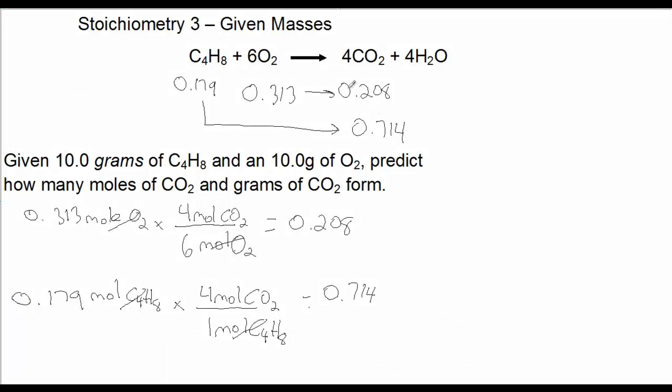So, in this case, the more realistic number is going to be the 0.208 moles of CO2. Even though, check it out, even though there's more moles of O2 rather than C4H8, again, it's that 6 to 1 ratio that makes this occur this way. So, our answer is going to be 0.208 moles of CO2. And if you convert 0.208 moles of CO2 to grams, you get 9.17 grams of CO2.